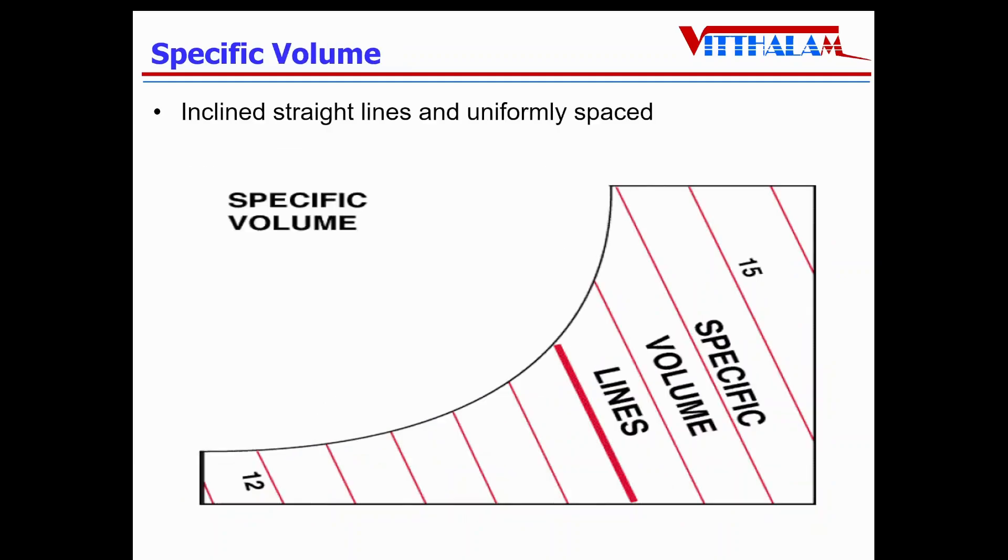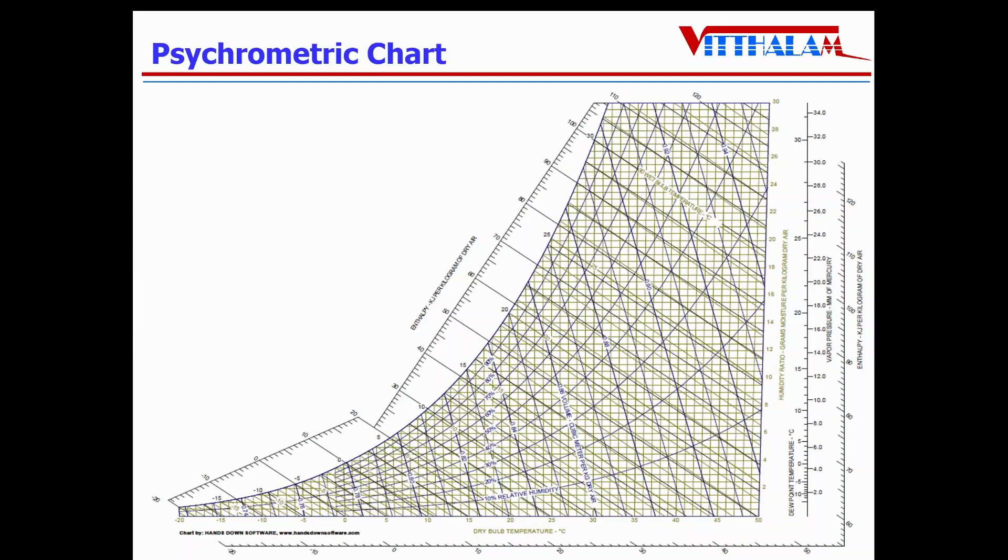Then specific volume, also inclined straight lines and uniformly spaced, but a little bit different than the specific enthalpy lines. So if I connect all these properties and make a chart, that chart is known as a psychrometric chart.